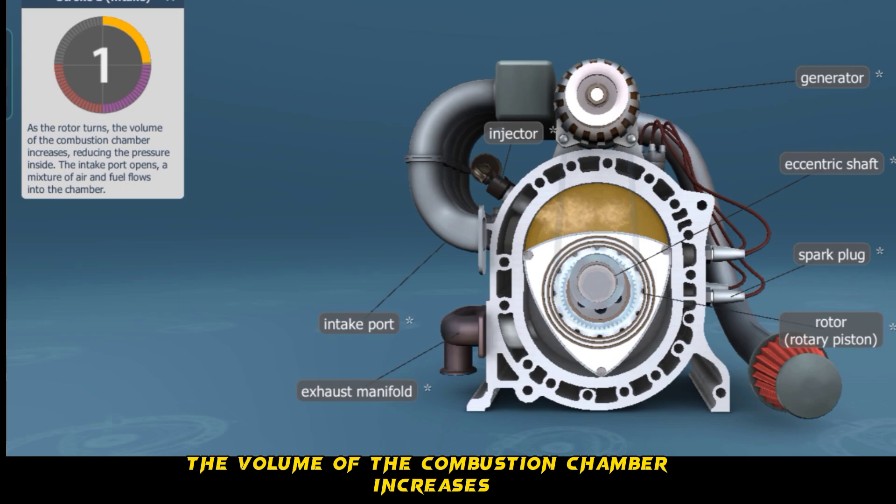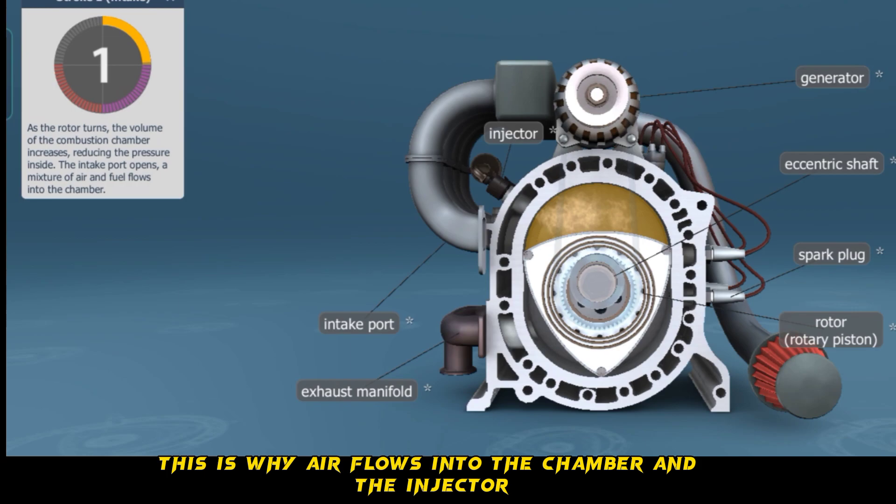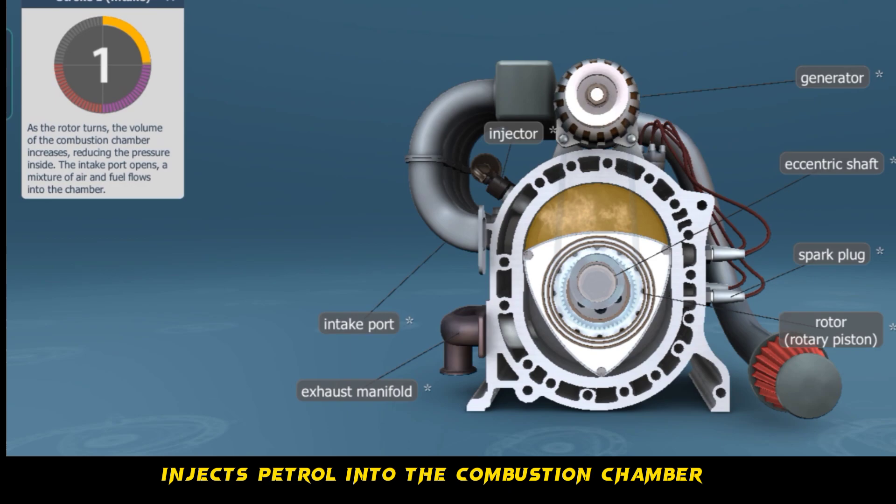As the rotor turns during the first stroke, the volume of the combustion chamber increases, reducing the pressure inside. This is why air flows into the chamber, and the injector injects petrol into the combustion chamber.